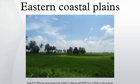The region receives both the northeast and southwest monsoon rains, with its annual rainfall averaging between 1000 mm and 3000 mm. The width of the plains varies between 100 to 130 km. It is locally known as Northern Sarkars in the northern part between the Mahanadi and Krishna rivers, and Coromandel Coast in the southern part between the Krishna and Kaveri rivers.